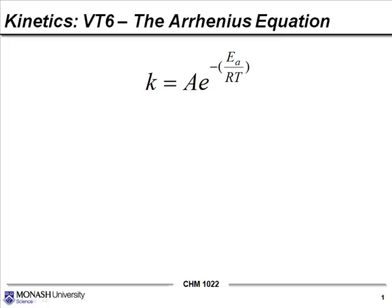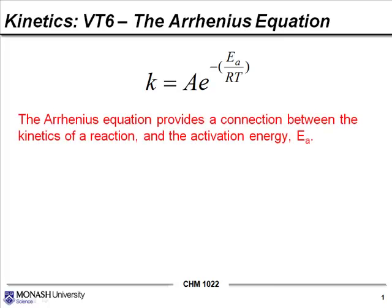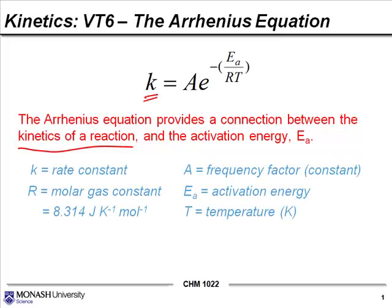One form of the Arrhenius equation appears on the screen here. You can see that we have a connection between the rate constant k — the kinetics of the reaction as given by this rate constant k — and the activation energy. This is not something that we've seen in the rate laws or the integrated rate laws. k is the rate constant, the same rate constant that we see in the rate laws and the integrated rate laws.